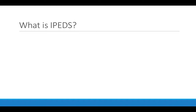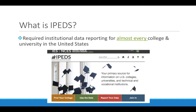These programs include Pell Grant, federal student loan programs, etc. So in exchange for receiving federal financial aid and federal money, the Higher Education Act of 1965 required all of these institutions to report certain data to the federal government on student enrollments, completion, graduation, faculty and staff information, finances, and cost of attendance.